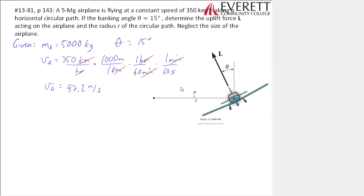We have enough information to find R and L. The clue to use normal-tangential coordinates is the circular path—we typically use normal-tangential when we know the path. The horizontal circular path is a very big clue. Setting up the three directions: tangential is the direction the plane is moving—a dot coming toward us, labeled UT.